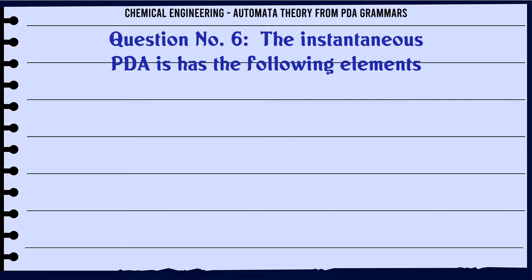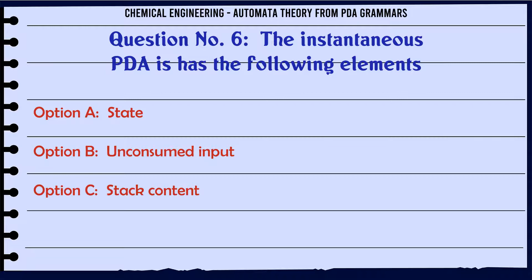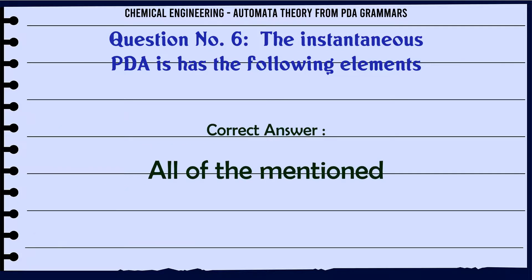Instantaneous PDA has the following elements. Option A: State. Option B: Unconsumed input. Option C: Stack content. Option D: All of the mentioned. The correct answer is all of the mentioned.